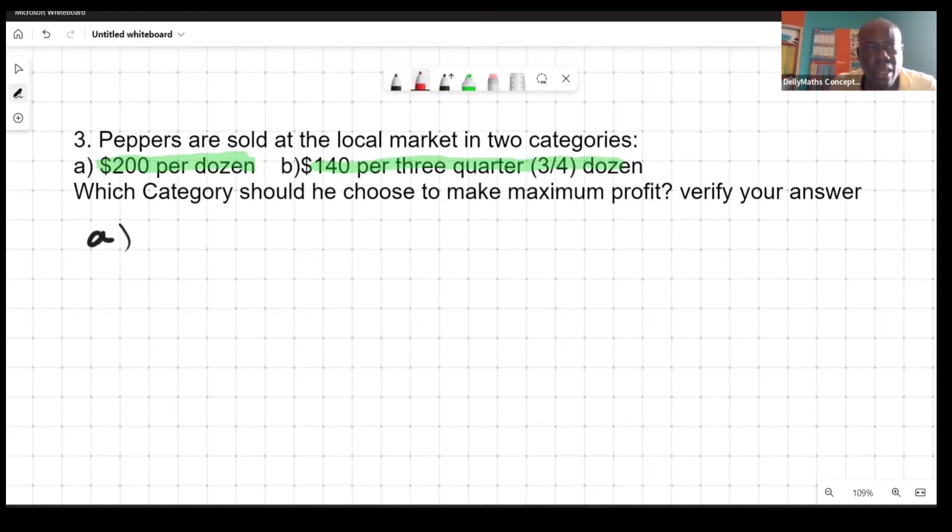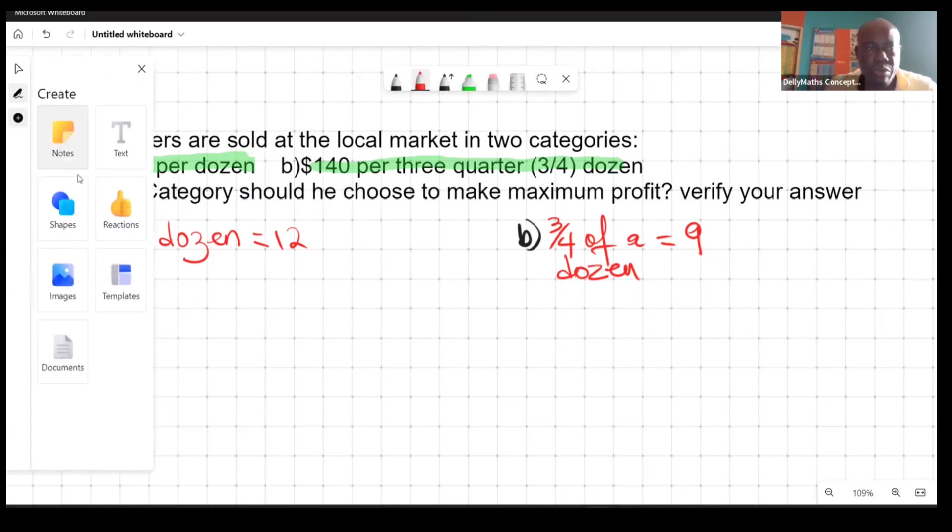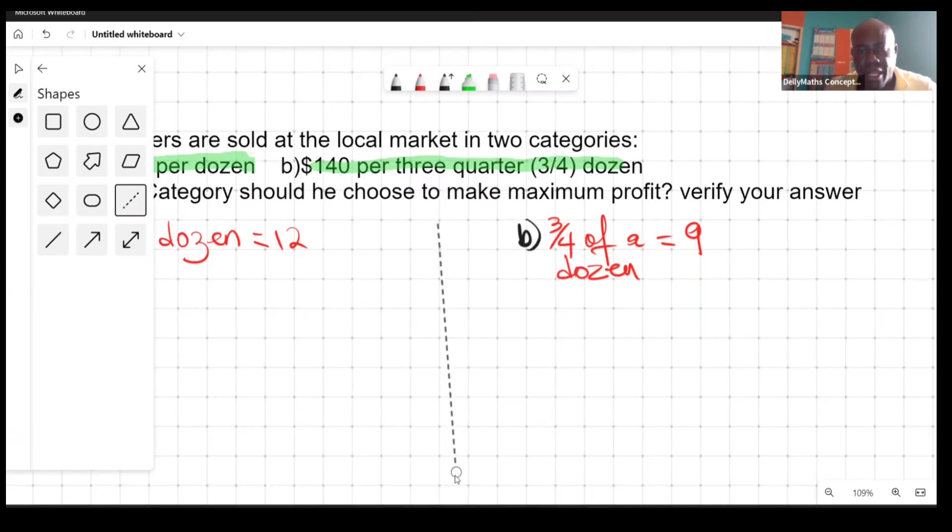We need to firstly set aside what is a dozen, what is three quarters of a dozen. Category A, one dozen is 12, and for category B, three quarters of a dozen is actually nine. What we want to do is work both, see what's going on, and then decide which would have been best for him.